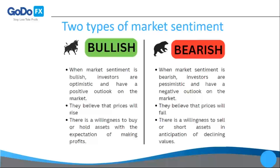There are two types of market sentiment: bullish and bearish. When sentiment is bullish, investors are optimistic and have a positive outlook — they believe prices will rise and are willing to buy or hold assets expecting profits. For bearish sentiment, investors are pessimistic with a negative outlook — they believe prices will fall and are willing to sell or short assets in anticipation of declining values.